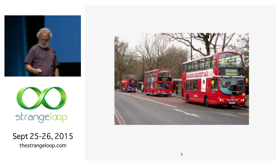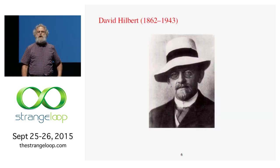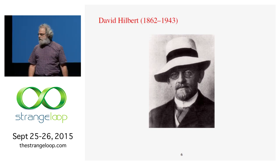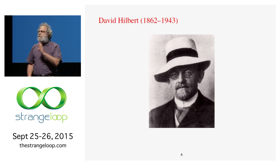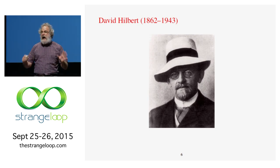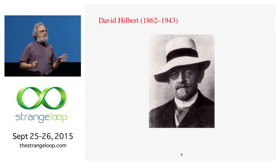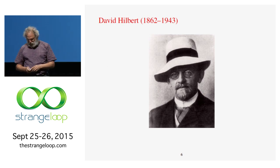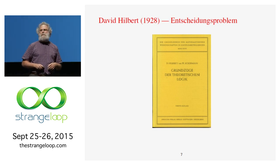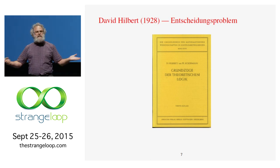Why did this happen? At the dawn of the 20th century, one of the foremost proponents of formal logic was David Hilbert in Göttingen. What he wanted to do was put all mathematicians out of business — he wanted an algorithm that, given a statement in formal logic, would determine if that statement was true or false. This was called the Entscheidungsproblem, because it sounds a lot better in German. It just means decision problem.